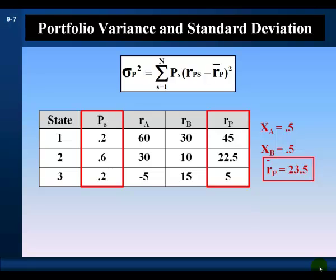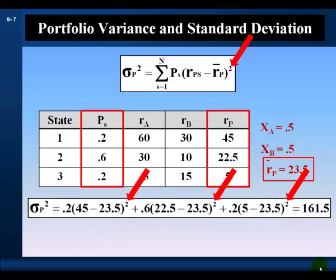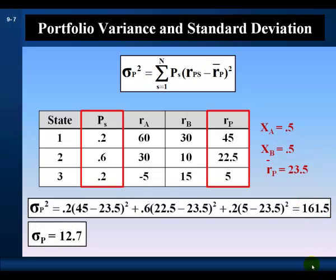We previously calculated the expected return for the portfolio: 23.5%. Given the portfolio's state-contingent returns, their probabilities, and the portfolio's expected return, let's calculate the portfolio's variance. In each state, we calculate the state-contingent return's deviation from the expected return, square the deviations, multiply by the probability of the state, and sum across all states to get the portfolio's variance: 161.5% squared. We take the positive root of the variance to get the portfolio's standard deviation: 12.7%.